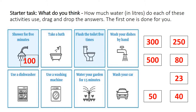The amounts are all in litres: 300 litres, 500 litres, 50 litres, 250 litres, 80 litres, 23 litres, and 40 litres. You need to decide which activity uses the most water — so which is 500, then 300, 250, the 100 is done for you, then 80, 50, 40 and 23. You can drag and drop them across once you've closed the PowerPoint presentation.